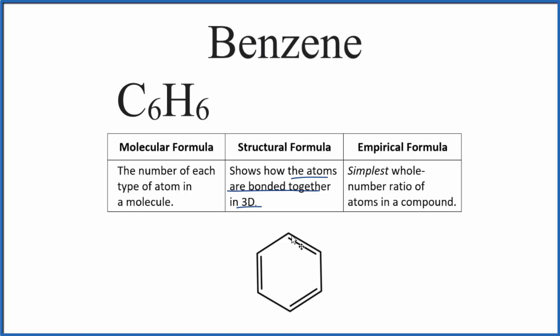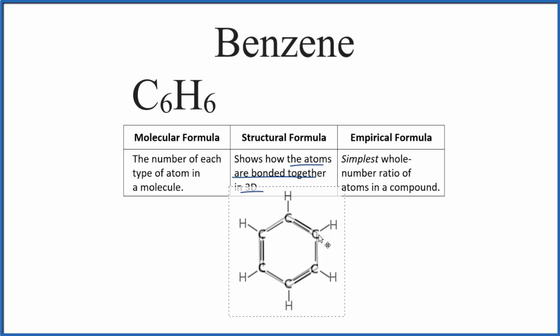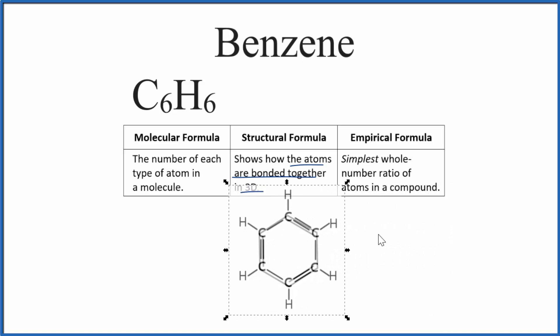If we wanted to write the carbon atoms in and the hydrogens, that would look like this. So you can see the carbons where those lines join and then on the outside we have the hydrogen atoms. This is the structural formula for benzene.